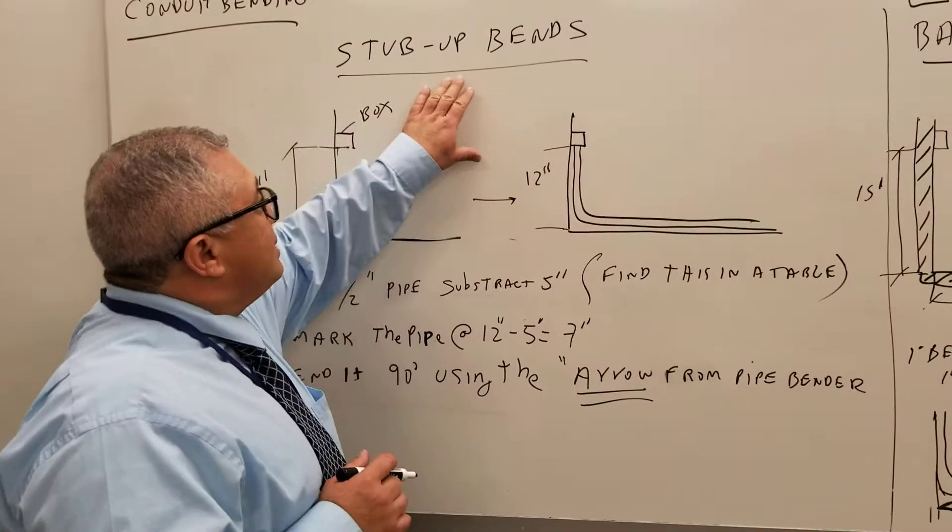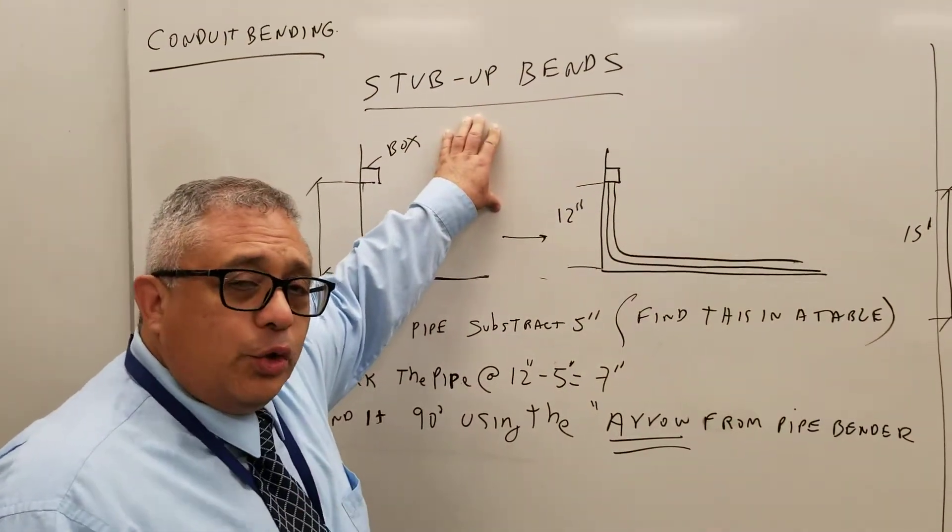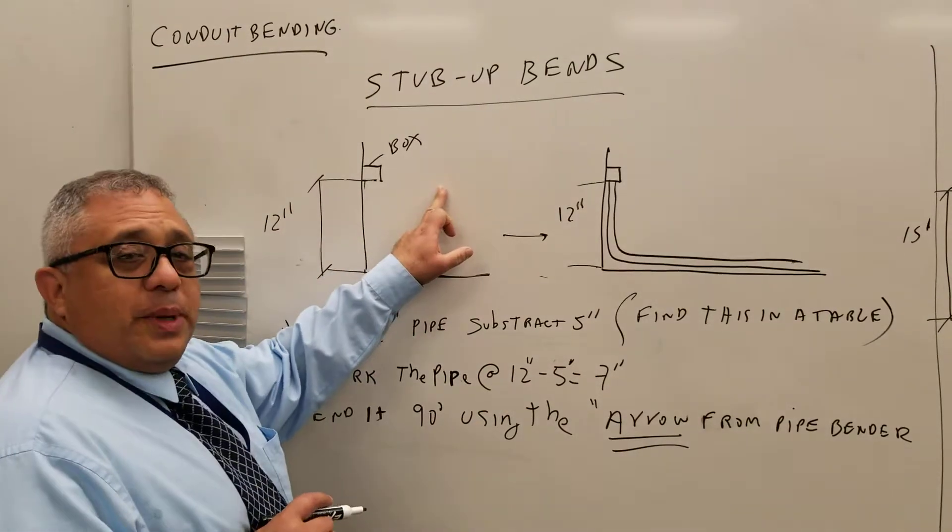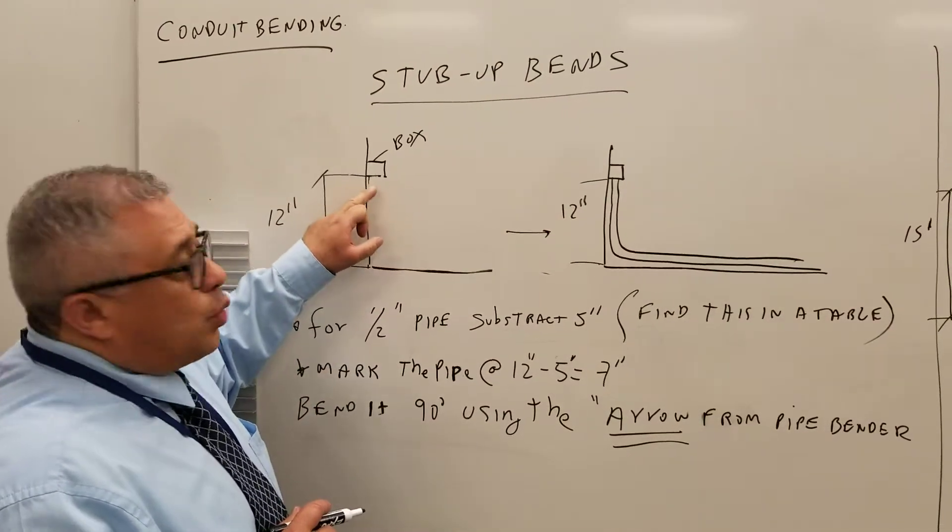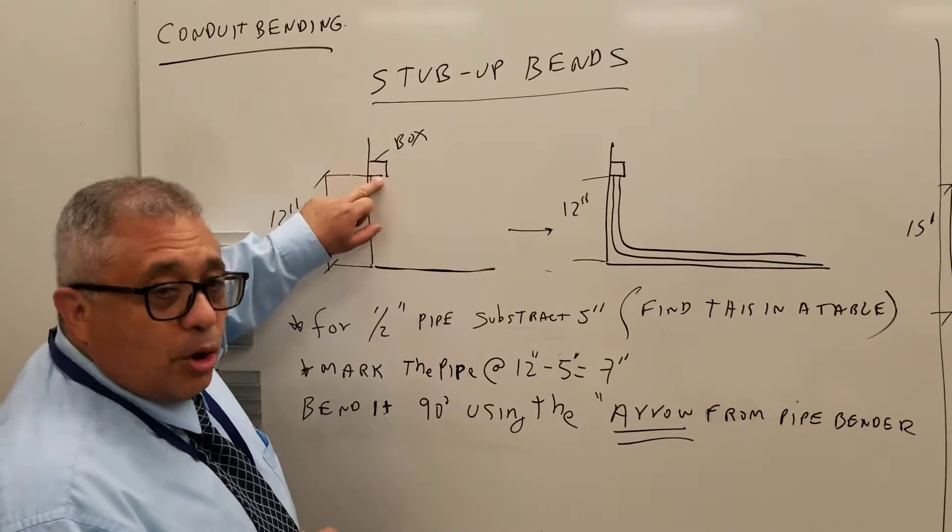The first one is precision stub-up bends. When do you use this bend? Use this bend when you want to run a pipe from the floor all the way up to a box.